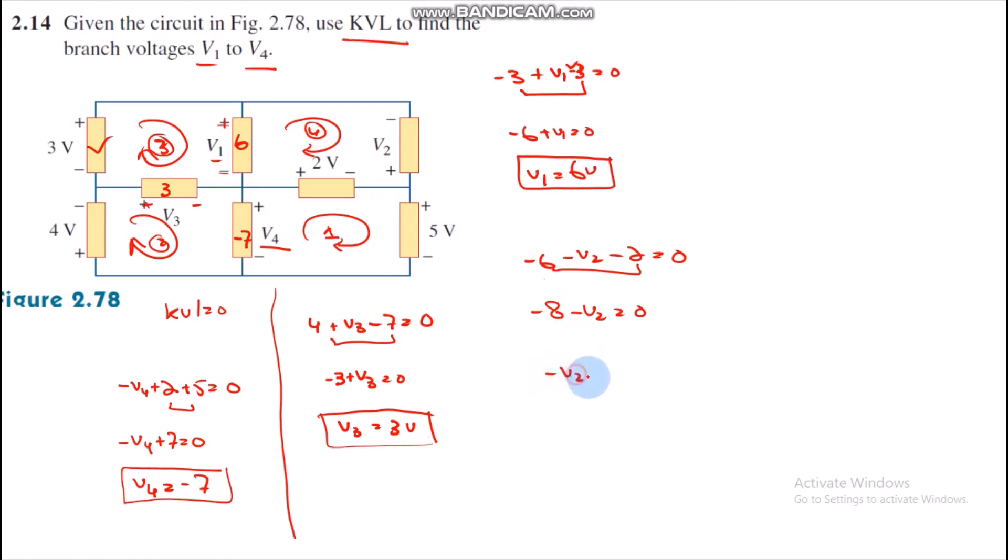Then minus V2 equals 8, and we get V2 equals minus 8.